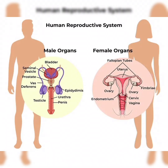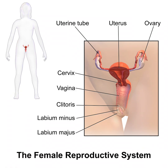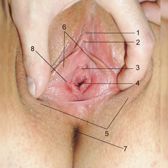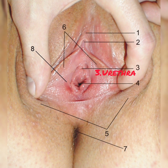Now we discuss the female reproductive system. The female reproductive system consists of body parts that enable sexual intercourse, reproduction, and menstruation. It includes both external and internal parts. The external parts consist of the vulva, labia majora, labia minora, clitoris, vaginal opening, hymen, and urethral opening.